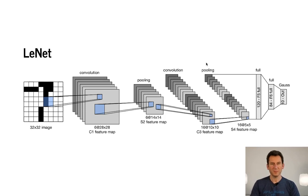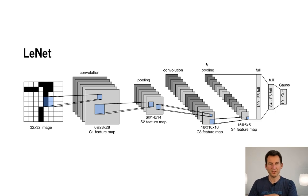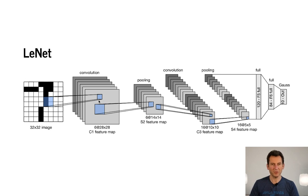Let's look at how to implement LeNet. Here's the architecture we're going to implement: there's a source image, convolution, pooling, another convolution, another pooling, and then a couple of dense layers.